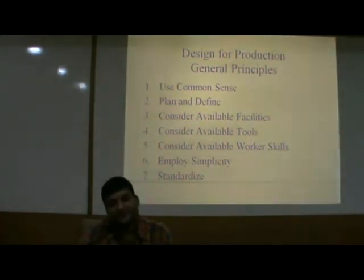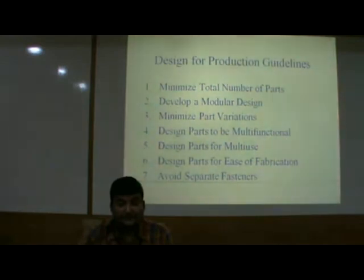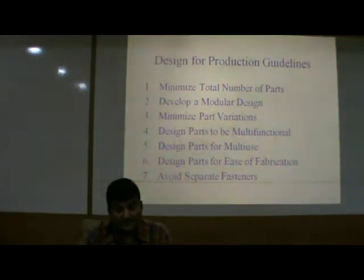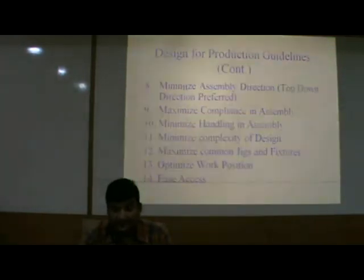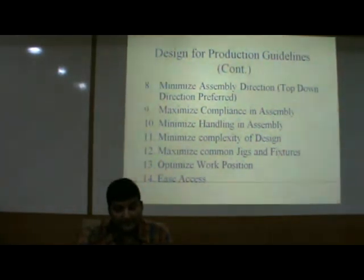Design for production general principles: use common sense; plan and define; consider available facilities; consider available tools; consider available worker skills; employ simplicity; and standardize. Design for production guidelines: minimize total number of parts; develop a modular design; minimize part variations; design parts to be multifunctional; design parts for multi-use; design parts for ease of fabrication; avoid separate fasteners; minimize assembly direction — top-down direction preferred; maximize compliance in assembly; minimize handling in assembly; minimize complexity of design; maximize common jigs and fixtures; optimize work position; and ease access.